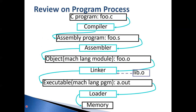Let's review what we have learned so far. We learned how our program is transformed so that our computer can run it. We have C code; the compiler converts C to assembly language, and the assembler converts assembly language to object code, which is essentially machine language. But by itself, the object code cannot be executed because it doesn't link to libraries or other object code files.